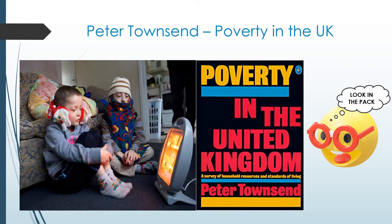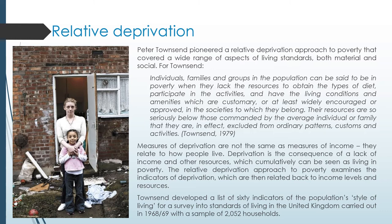One key example is Peter Townsend's Poverty in the UK — discussed in your pack. The study highlighted a significant level of poverty in the UK, directly and indirectly caused by social policies of the time. Townsend pioneered research into relative deprivation, looking at material and social standards. His definition: individuals, families, and groups could be said to be living in poverty if they lack the resources to obtain the types of diet, participate in activities, and have the living conditions which are customary or widely approved in their society.